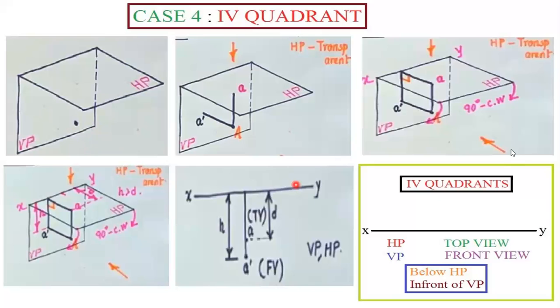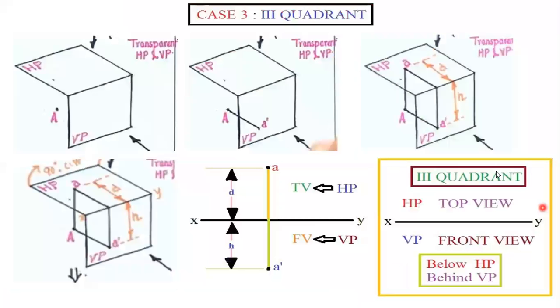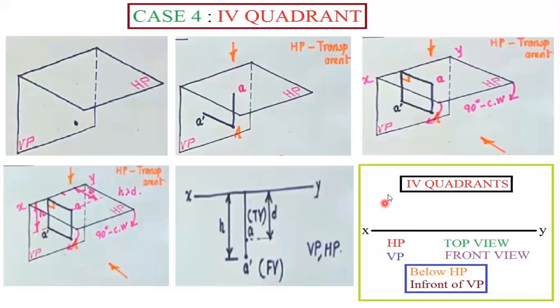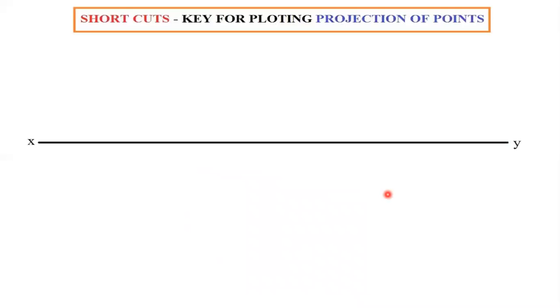So consider what we saw here — these things are very helpful and useful for solving problems. I hope you would have understood the concept. The key thing is: when you view from front view, where does the point fall? When you view from the top view, where does the point fall? Just represent it and try to rotate only the horizontal plane 90 degrees clockwise. This is the shortcut for solving the projection of points.